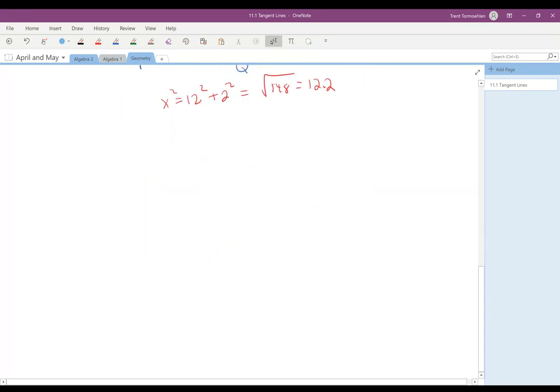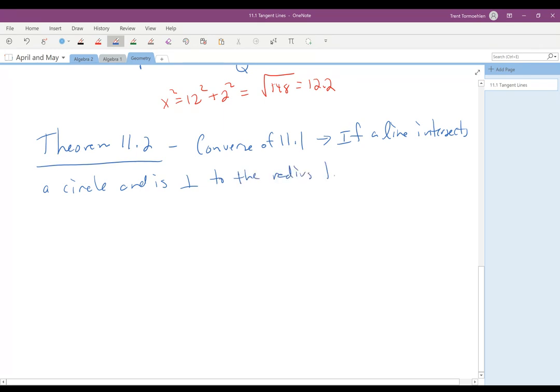Okay, the other two theorems that we have in this section, theorem 11.2 is going to be just the converse of 11.1. And that is if a line intersects a circle and is perpendicular to the radius through that point,